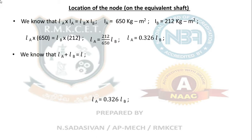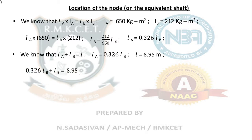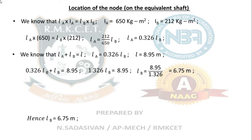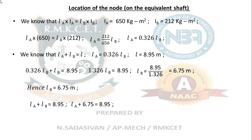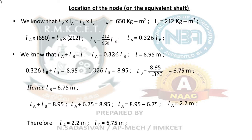We know that LA + LB = L (total equivalent length = 8.95 m). Substituting LA = 0.326·LB: 0.326·LB + LB = 8.95. Solving gives LB = 6.75 meters. Then LA = 8.95 − 6.75 = 2.2 meters. So LA = 2.2 m and LB = 6.75 m.